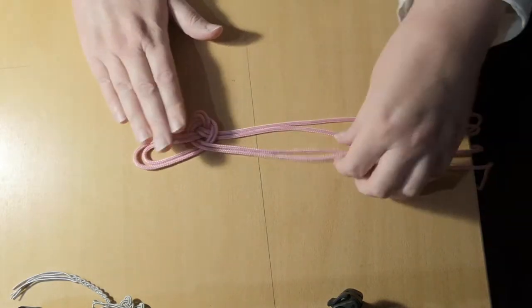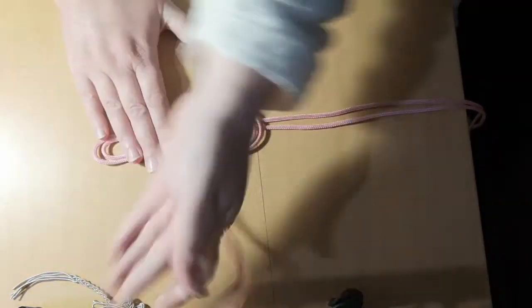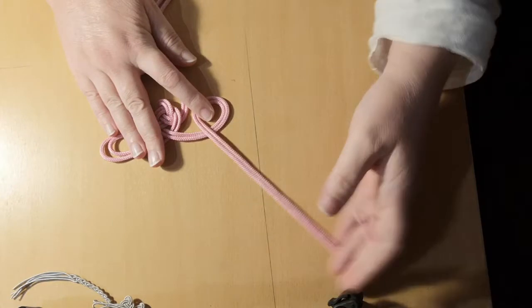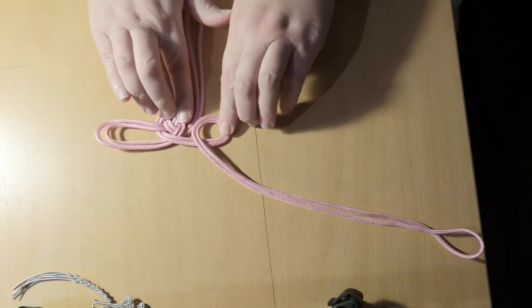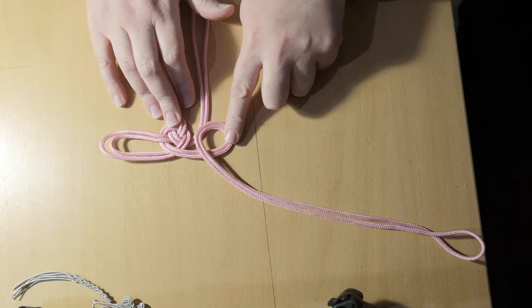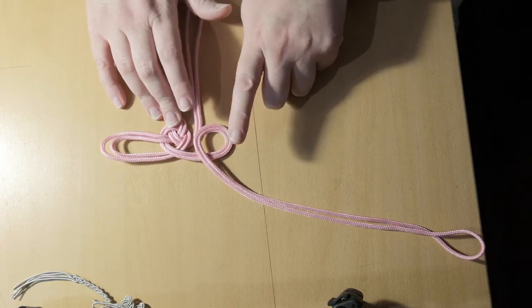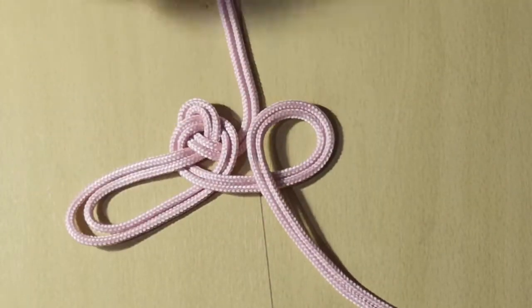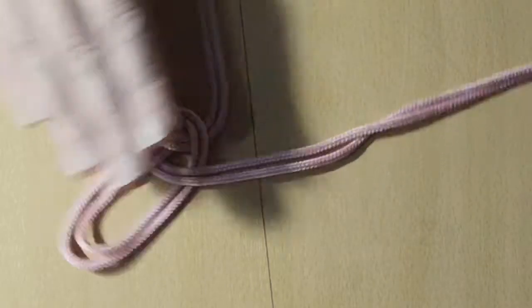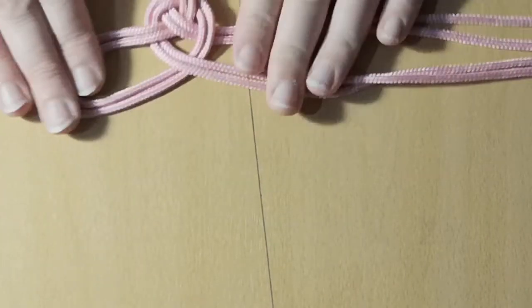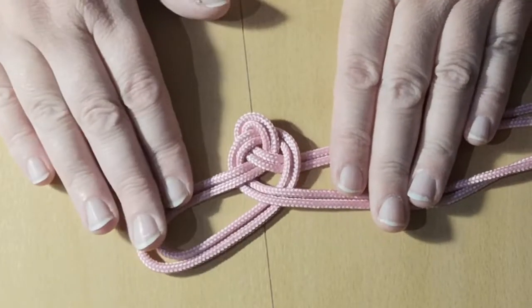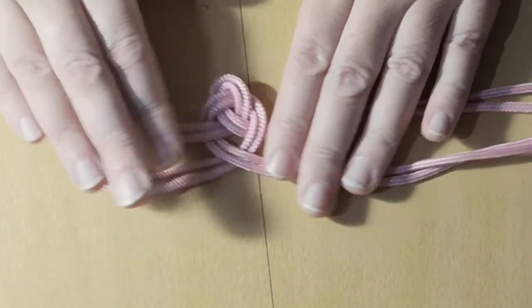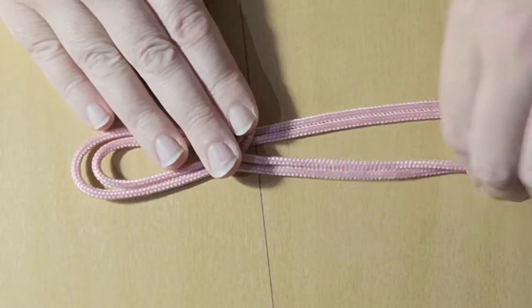So this looks as it should. Now for the next one, you just repeat the pattern. You make the loop, making sure it goes over itself. Let me zoom in a little bit for you. So this is your starting knot. And now you are going to repeat that.